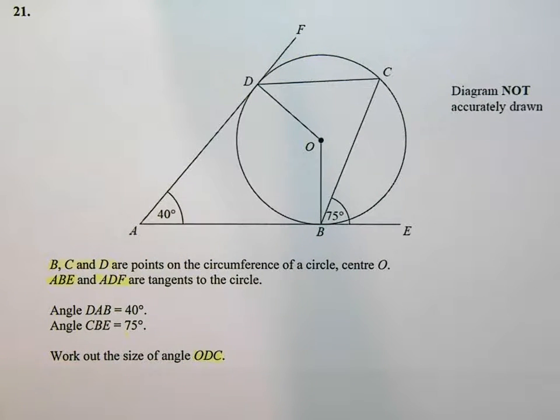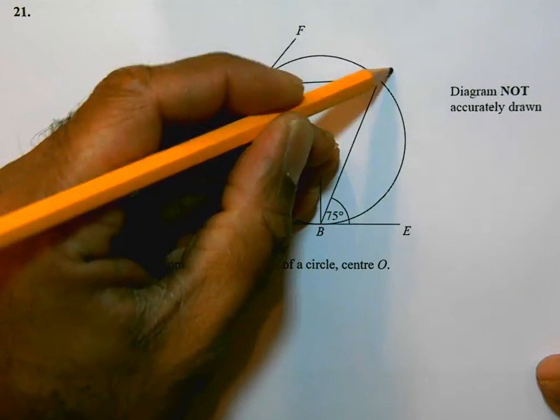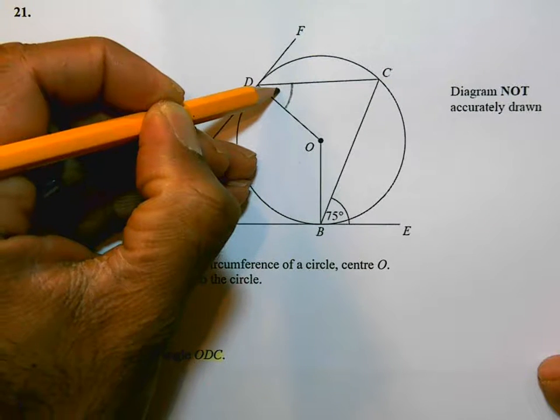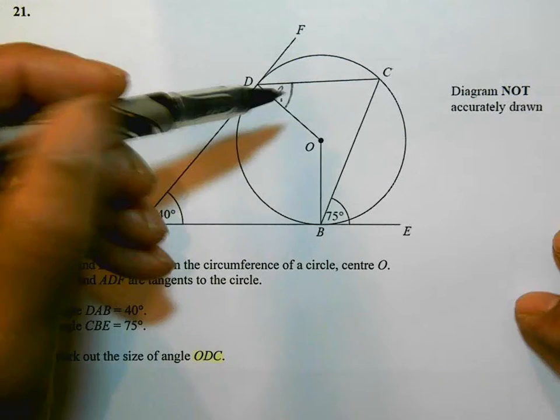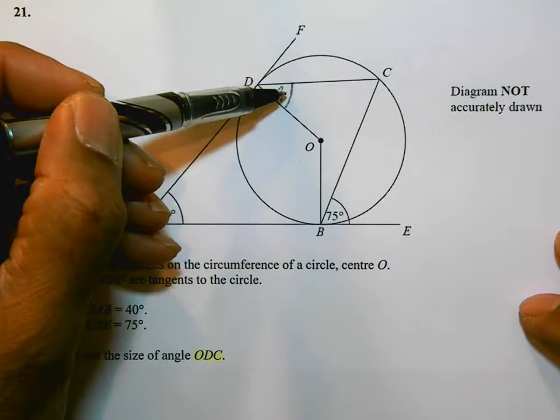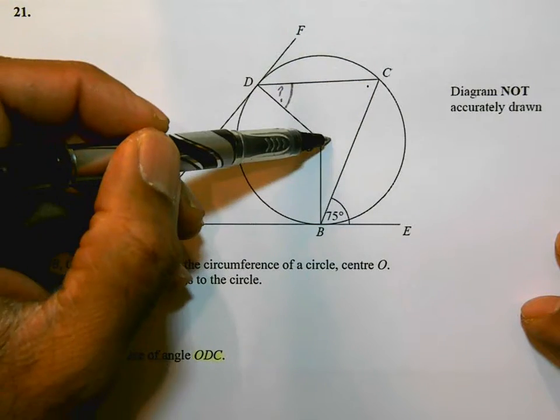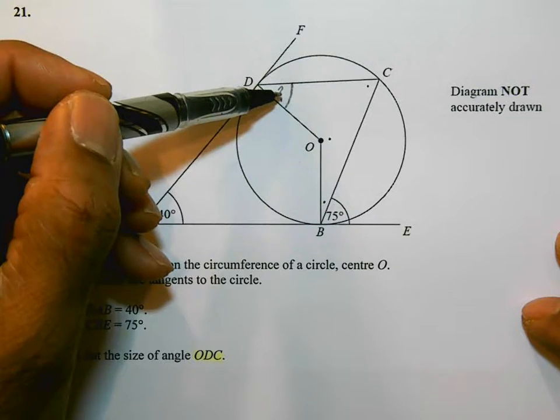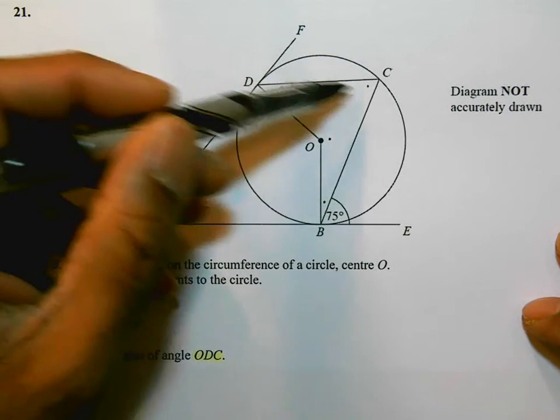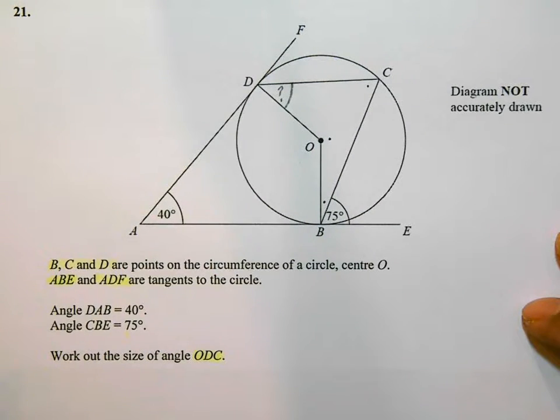So I need to first of all mark in this angle that they want me to find ODC. So that's this angle here is what they'd like me to work out. Now what I need to do is think about each of the angles that could help me work this out. If it's possible for me to work out these angles, then I should be able to work out this angle here from the fact that the four angles in a quadrilateral add up to 360 degrees.